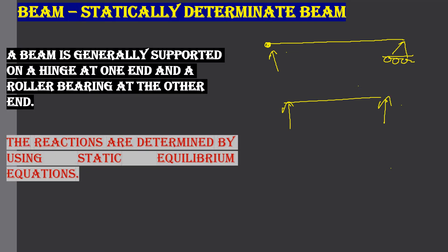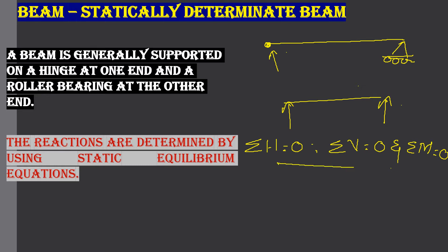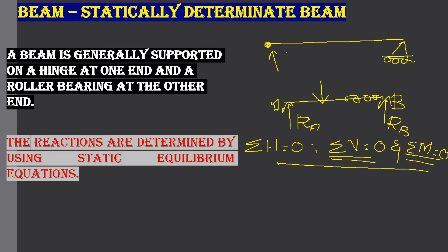For such a beam, the reactions are determined by using the static equilibrium equations: Sigma H equals zero, Sigma V equals zero, and Sigma M equals zero. By using these three static equilibrium equations, we can determine the reactions. Taking the supports as A and B, the reactions Ra and Rb can be determined using Sigma V equals zero and Sigma M equals zero. That is why we call this a statically determinate beam.